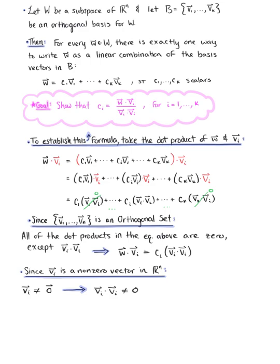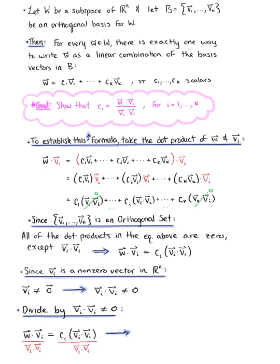Now since vector v sub i is a non-zero vector in R^n, we know that the dot product of vector v sub i with itself is not equal to 0. So we can divide both sides of this equation by the dot product of vector v sub i with itself, which allows us to attain the formula: c sub i is equal to the dot product of vector w with vector v sub i, divided by the dot product of vector v sub i with itself. And since c sub i is an arbitrary scalar, this holds true for all i equal to 1 through k, which completes our proof.